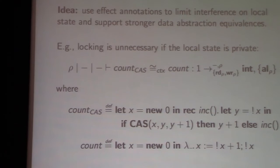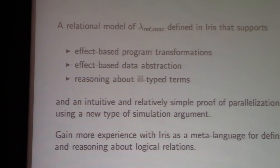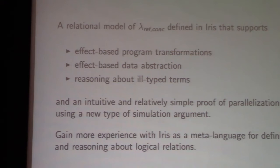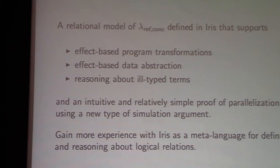What we've done in this work is define a relational model as semantics for this type and effect system. The goal was to support advanced effect-based program transformations — in particular, this parallelization transformation — and also support both standard ML-style data abstraction and effect-based data abstraction where you use effect annotations to limit interference. We also wanted a much simpler proof of the parallelization theorem compared to a previous model that had a very complicated proof, and to hopefully get something more easily mechanizable.